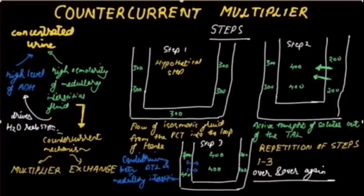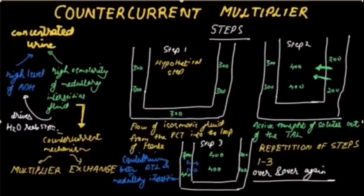In summary, there are three steps: Step 1 is the flow of isoosmotic fluid from the proximal tubule into the loop of Henle. Step 2 is the active transport of solutes out of the thick ascending limb of the loop of Henle. Step 3 is equilibrium between the descending thin limb and the medullary interstitium. In this incremental fashion, a high osmolarity of the renal medullary interstitium is created, enabling water reabsorption to occur in the presence of ADH.